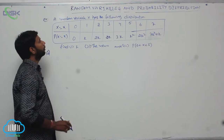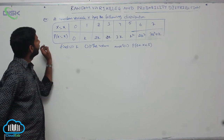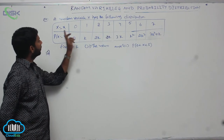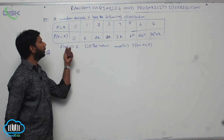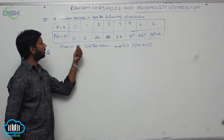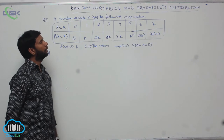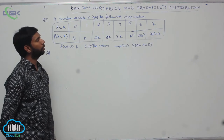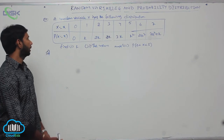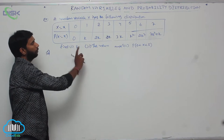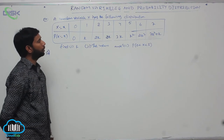A random variable capital X has the following distribution with values 0, 1, 2, 3, 4, 5, 6, 7 and their corresponding probabilities are 0k, k, 2k, 2k, 3k, k squared, 2k squared, 7k squared plus k. Find the value of k, find the mean, and the probability of 0 less than X less than 5.